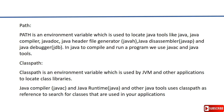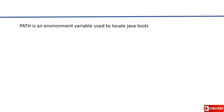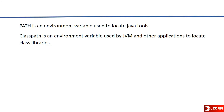I hope this clears up what is PATH and what is CLASSPATH, and why we need to set PATH and CLASSPATH to compile and run a Java program. Let's summarize what we have discussed. PATH is an environment variable which is used to locate Java tools. On the other hand, CLASSPATH is an environment variable which is used by JVM and other applications to locate class libraries.